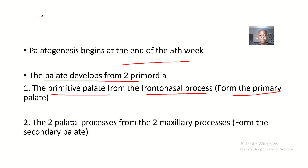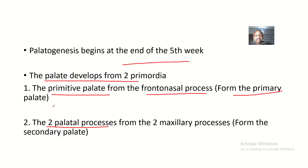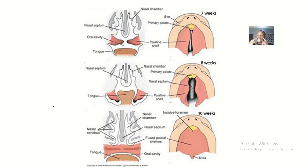There are also two palatal processes from the two maxillary processes, and they form the secondary palate. So the secondary palate is from the two palatal processes of the maxillary processes on each side. To recap: we have the primary palate and the secondary palate coming from the palatal processes of the maxillary processes.